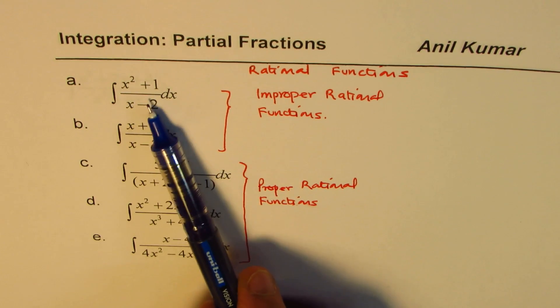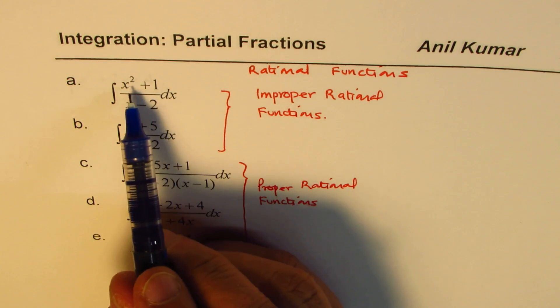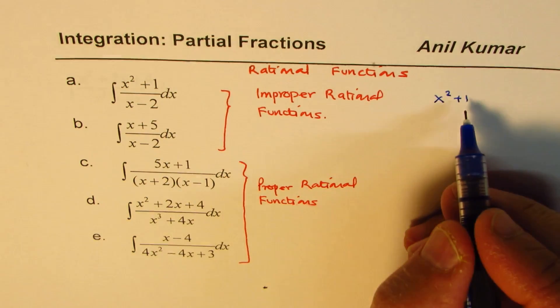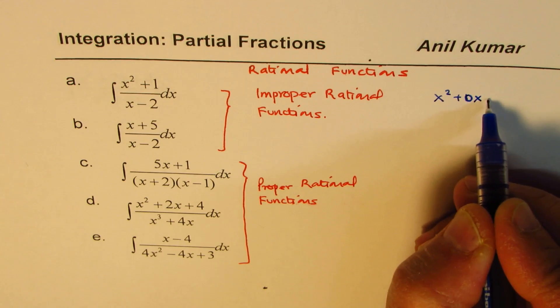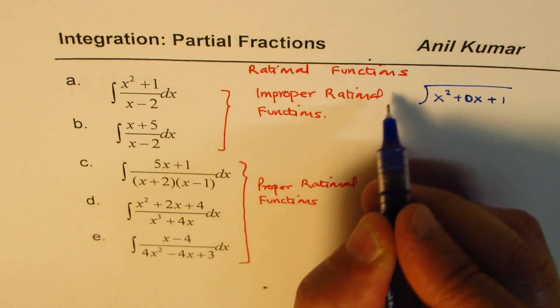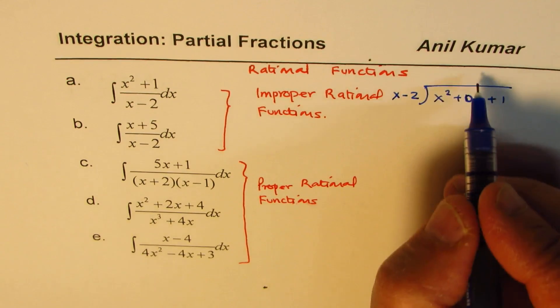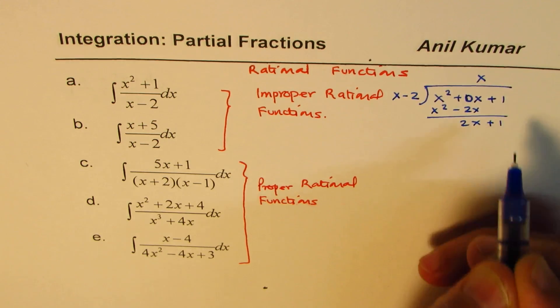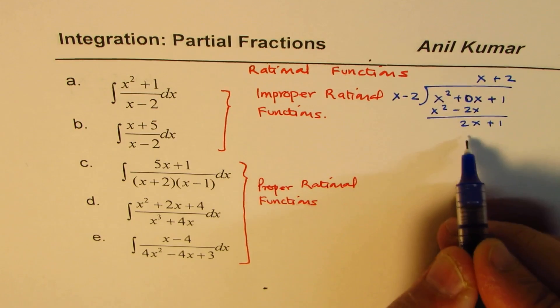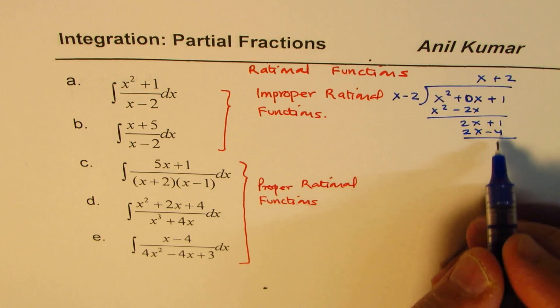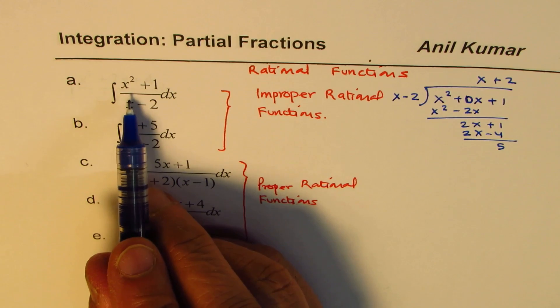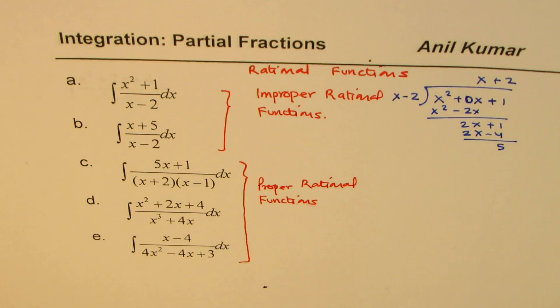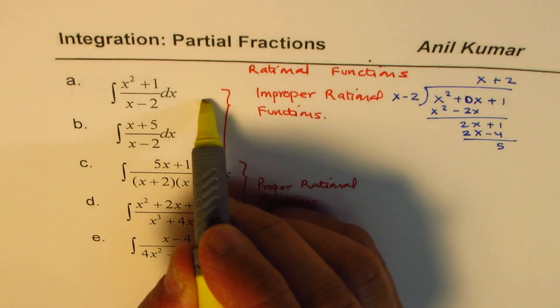So just to give you an example, for example, we have x square plus one, you should divide x square plus one by x minus two. Now, here we do not have x terms, we will introduce the placeholder, and then we will divide this function by the denominator, which is x minus two. So if you do that, you get x here, x square minus two x, then take away, two x plus one, and then you have to, and just two plus two times, so which is two x minus four, the remainder here will be five.